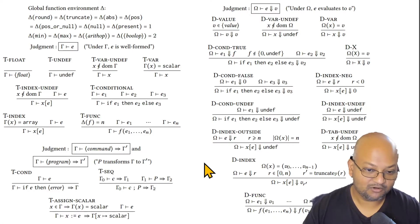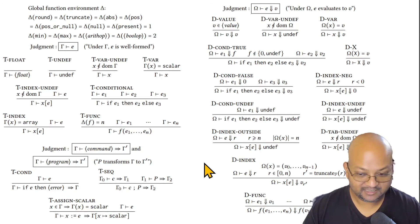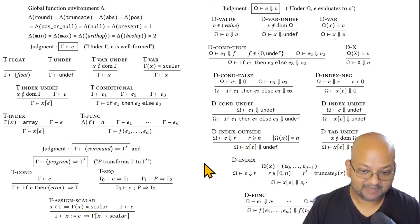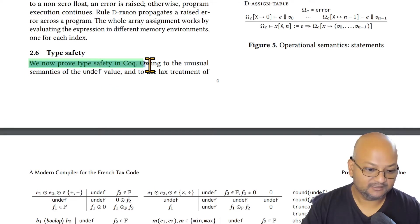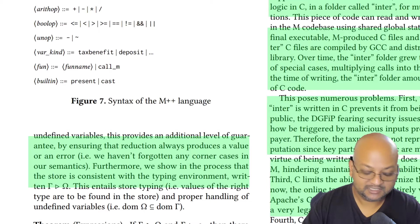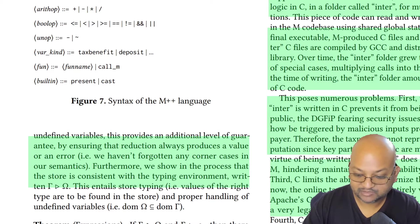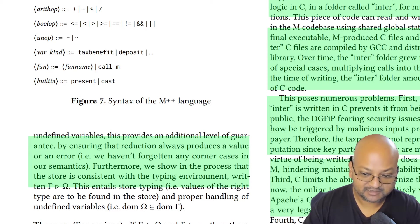The authors go on to describe a formal syntax and semantics of the M language, and they prove type safety in the COQ theorem prover. This is nice because the existing M language did not have a formally specified semantics that was automatically verified.